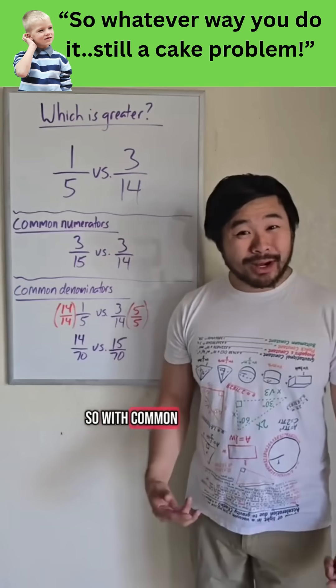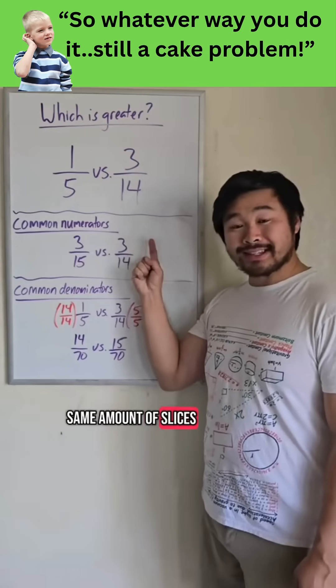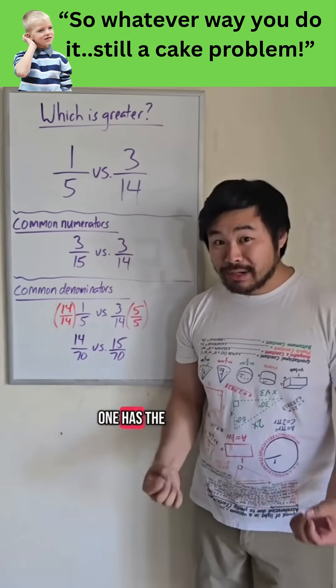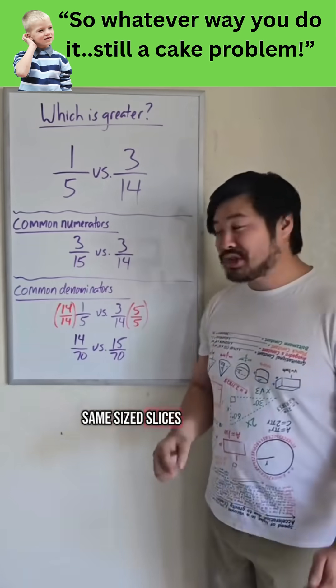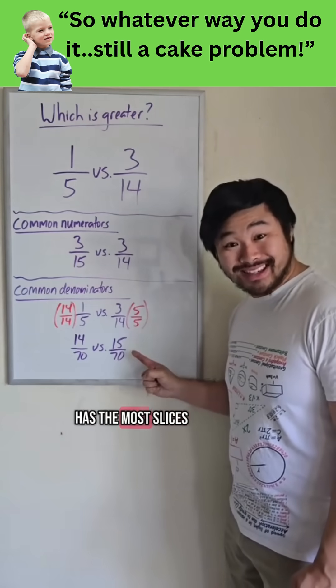So with common numerators, we have the same amount of slices, it's just a matter of which one has the bigger slice. And with common denominators, we have the same size slices, it's just a matter of which has the most slices.